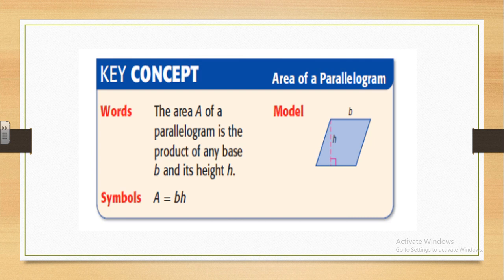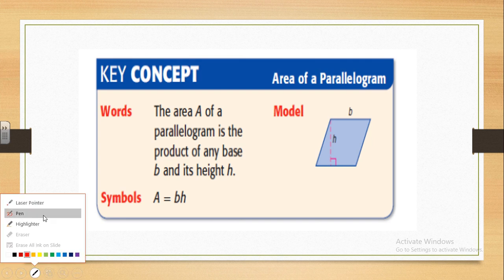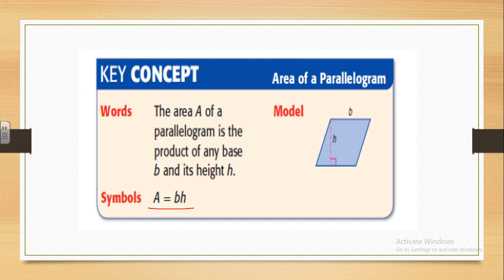Now let's know the rule. To find the area of a parallelogram, it's equal to base times height. Area of parallelogram equals base times height. The letter A represents the area of parallelogram, B represents the base, and H represents the height.